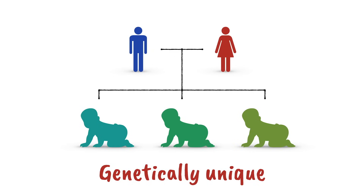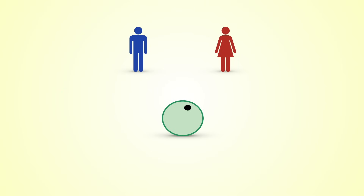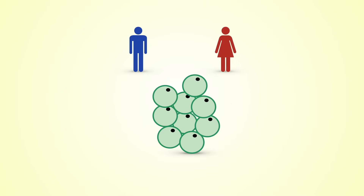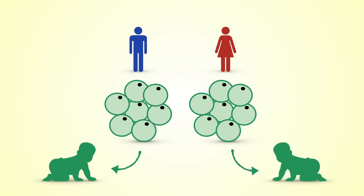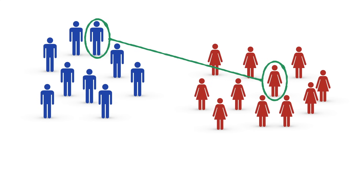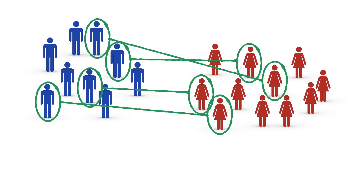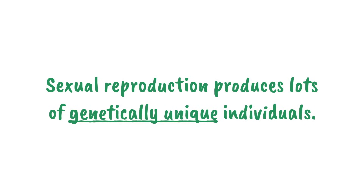No two sisters contain exactly the same DNA. No two brothers contain exactly the same DNA. Obviously, you're thinking — what about identical twins? This happens when an egg and sperm cell form a single zygote in a single instance of fertilization. Early in development, the newly forming collection of cells divides into two, and each collection goes on to form two genetically identical individuals. This is a rare occurrence, and it doesn't change the fact that sexual reproduction produces lots of genetically unique individuals.